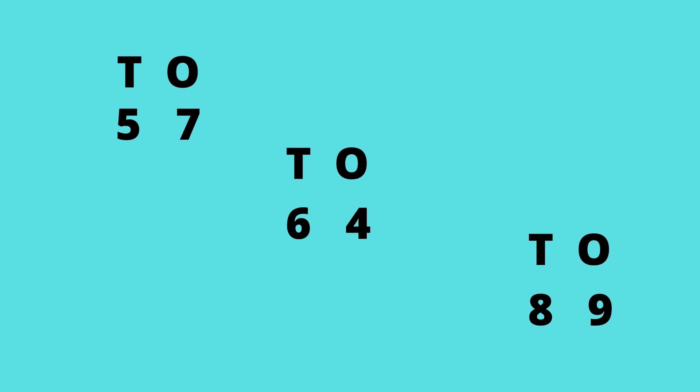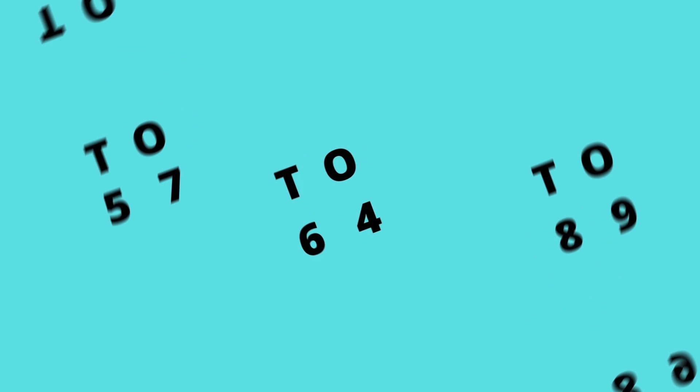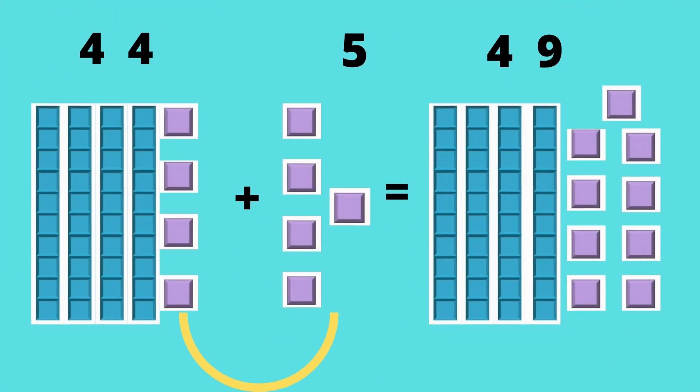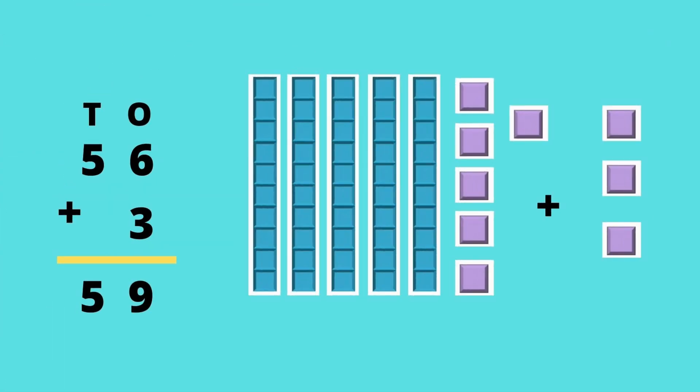And in 89, nine is ones and eight is tens. In 44, there are four tens and four ones. When five ones are added to four ones, it will be 49.